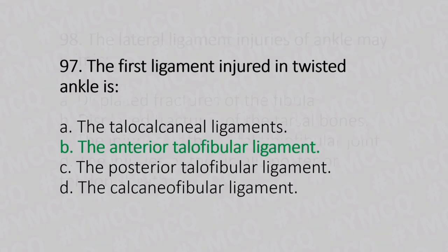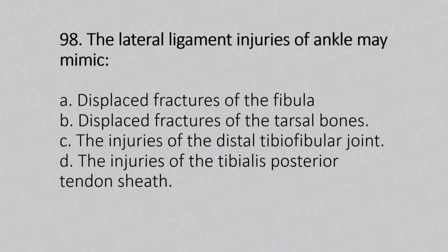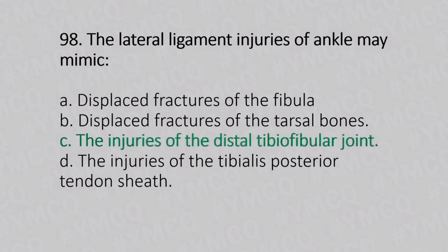Now let's move to question number 98. The lateral ligament injuries of the ankle may mimic. Option A: displaced fracture of the fibula. Option B: displaced fracture of the tarsal bones. Option C: the injury of distal tibiofibular joint. Option D: the injuries of the tibialis posterior tendon sheath. And the answer is Option C, the injury of distal tibiofibular joint.